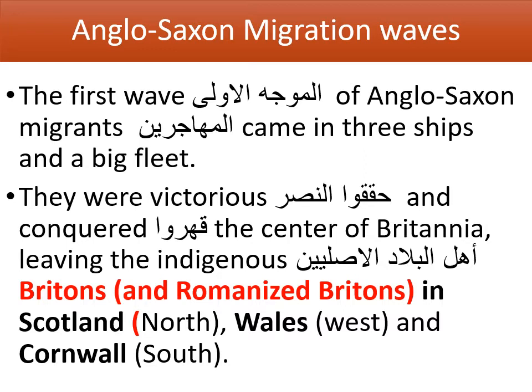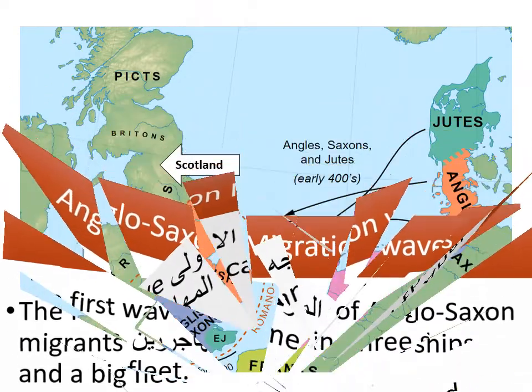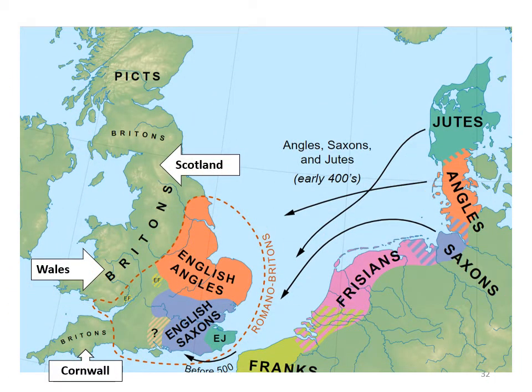The Anglo-Saxon forces came in large ships and were victorious, conquering the center of Britannia. They left the indigenous — or more precisely, the romanized — Britons in Scotland in the north, Wales in the west, and Cornwall in the south. The Anglo-Saxons took over the central regions.